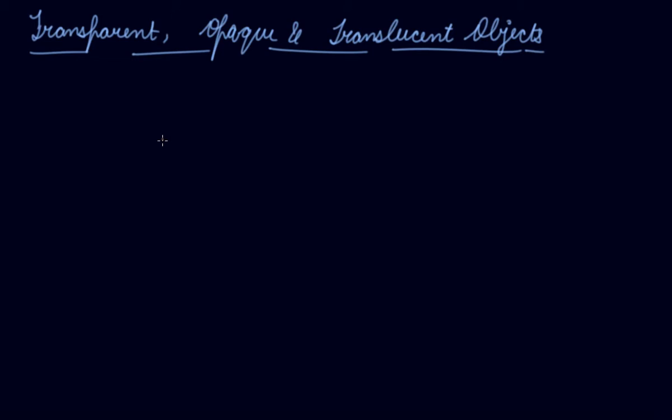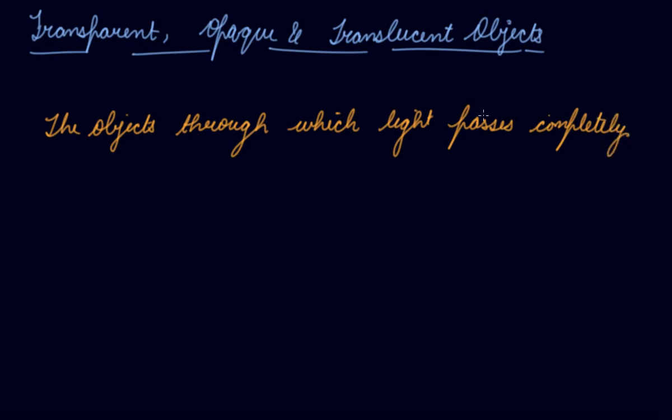Let's take a plain glass because glass allows the light to pass through it completely. So such an object is a transparent where you can see beyond it. So air, pure water, some plastics are other transparent objects. The objects through which light passes completely